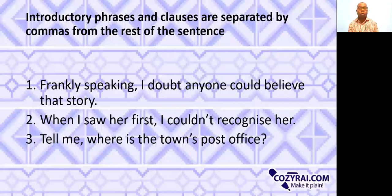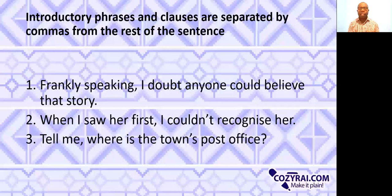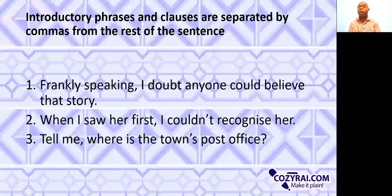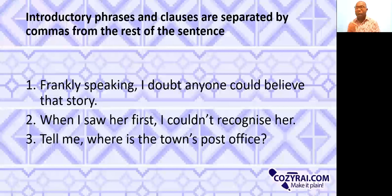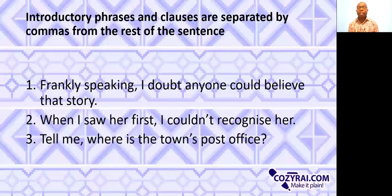Example three: 'Tell me, where is the town's post office?' All these introductory elements, once they come at the beginning, must be separated from the rest of the sentence. And even if they come at the end — for example, 'I doubt anyone could believe that story, frankly speaking' — there may not be a need for a comma. But usually, when we have introductory phrases and clauses, they are separated from the rest of the sentence by commas.